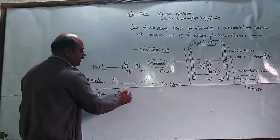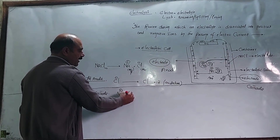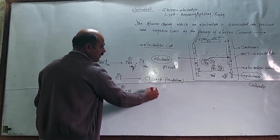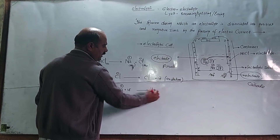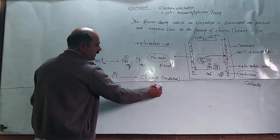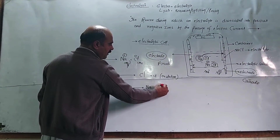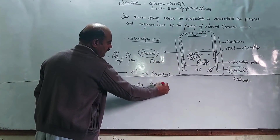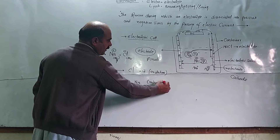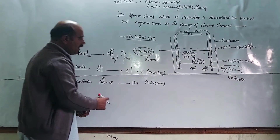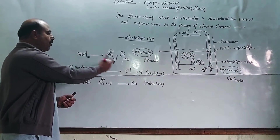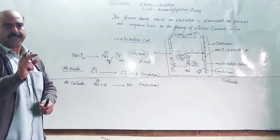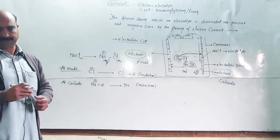At the cathode, electrons are gained by the ions. Gain of electron results in the ion becoming neutral. Gain of electron is called reduction. So the anode is the site of oxidation and the cathode is the site of reduction.